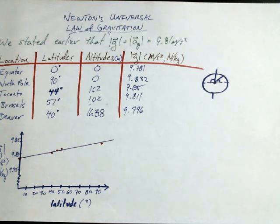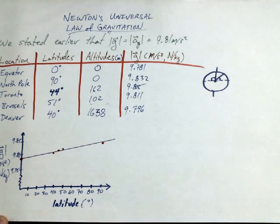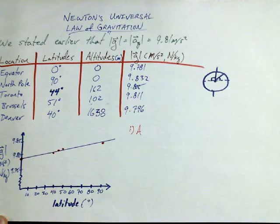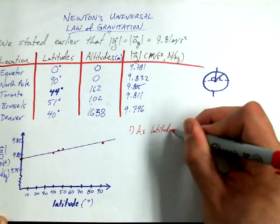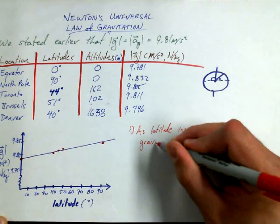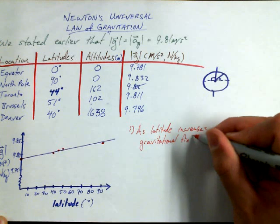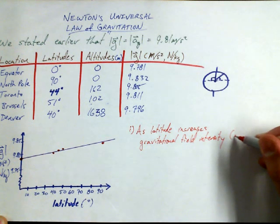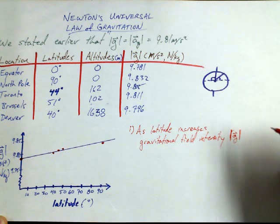What's the trend? These correlation descriptions usually go along the lines, as such and such changes, such and such other thing changes. So what's the correlation here? As what changes, what other thing changes? As one increases or one decreases, what other thing changes? As latitude increases, gravitation increases. That sounds reasonable, based on the data that we have at hand. So we might make the statement, as latitude increases, we observed that gravitational field intensity also increases.